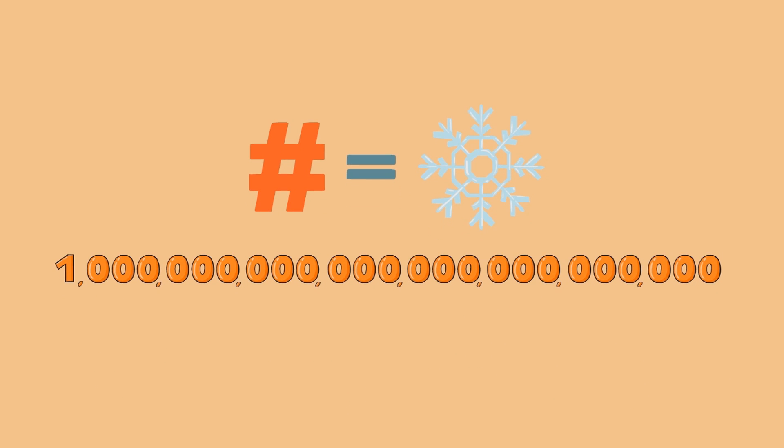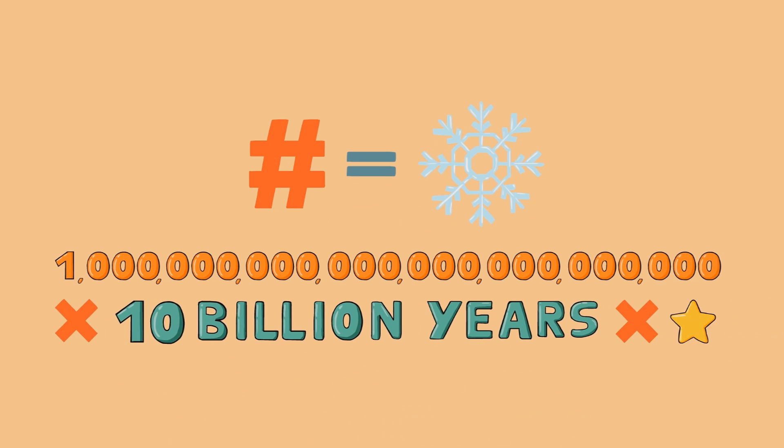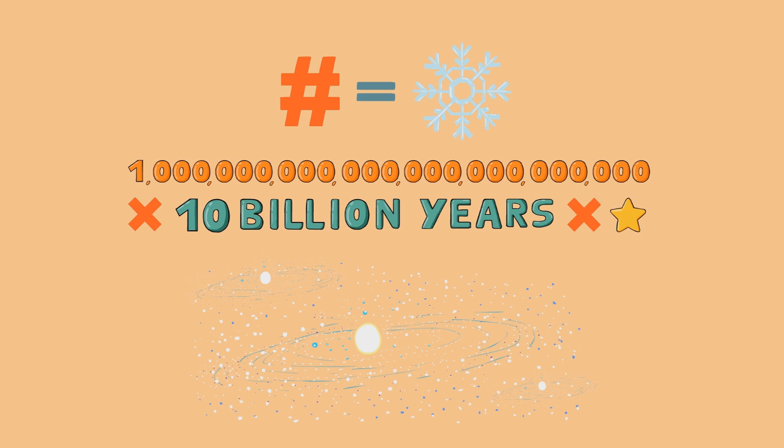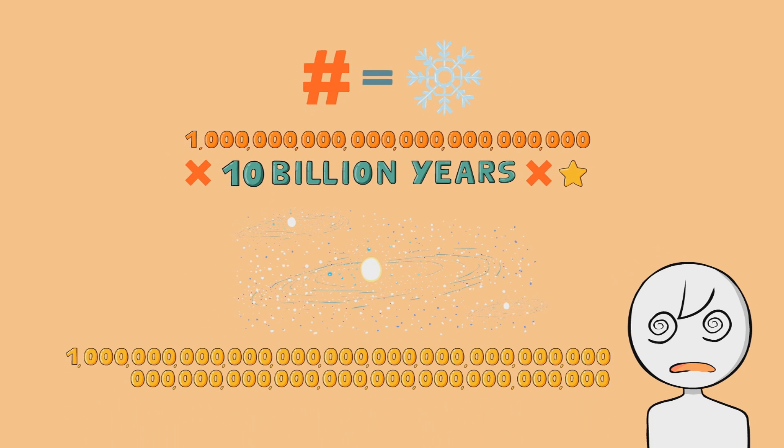Multiply that by 10 billion years, and multiply that by the estimated number of stars in the universe. With a pretty high estimate of one planet with snow on it per star, we get that the estimated number of crystals that have fallen on all of the planets in the entire universe since the beginning of time is about 10 to the 63rd.